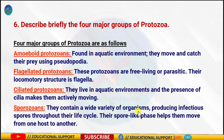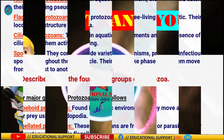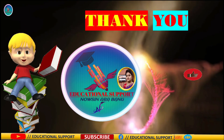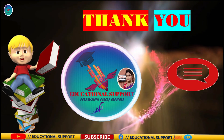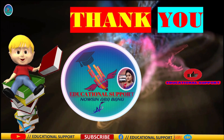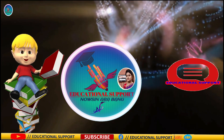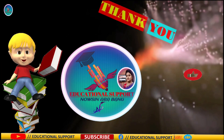The last group is Sporozoa. Many sporozoans have an infectious spore-like stage in their life cycle. The spore-like phase helps them get transferred from one host to another host — for example, Plasmodium. These are the four major groups of Protozoa. Thank you for watching; make sure you hit the subscribe button, click on the bell, and turn on notifications. See you in the next video.